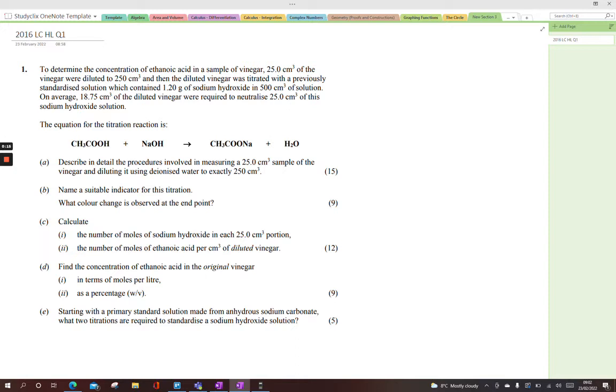So the first bit, describe in detail the procedures involved in measuring a 25 cm³ sample of the vinegar and diluting it using the ionized water to exactly 250 cm³. So 15 marks out of 50 marks, huge proportion. You have to spend your time. You might feel like a waste of time, but this is the one that builds the marks.